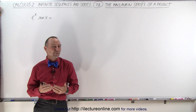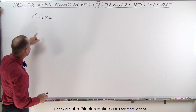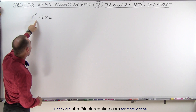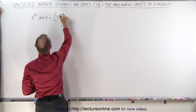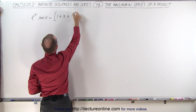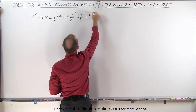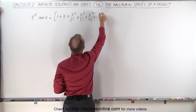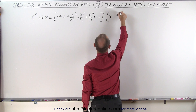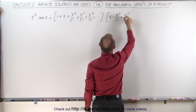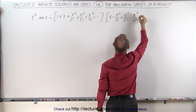Welcome to Electron Line. Here we're going to use the Maclaurin series to find the product of e to the x and sine of x. What we're doing is writing out the Maclaurin series for e to the x — which is 1 plus x plus x squared over 2 factorial plus x cubed over 3 factorial plus x to the 4th over 4 factorial and so forth — and then multiply that times the Maclaurin series for sine of x, which is x minus x cubed over 3 factorial plus x to the 5th over 5 factorial minus x to the 7th over 7 factorial and so forth.